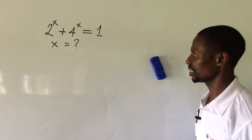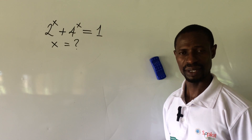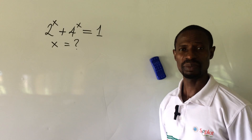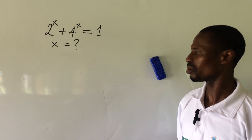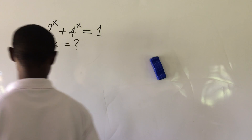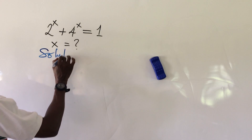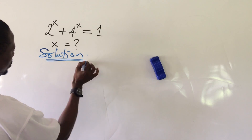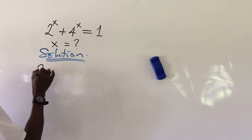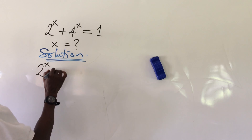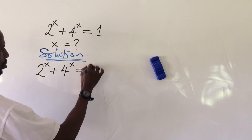Before we go to this challenge, if you're new here, kindly subscribe. The reason why you have to subscribe is because here we drop new mathematical challenges. So let's put down the question and see what comes out of this. We take a solution to this challenge. The question reads: 2 to the power of x plus 4 to the power of x equal to 1.